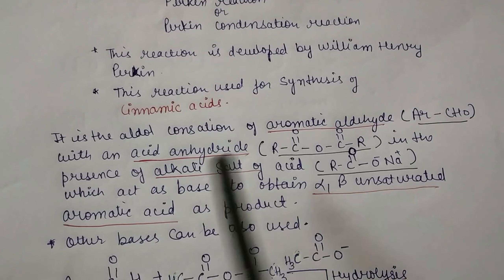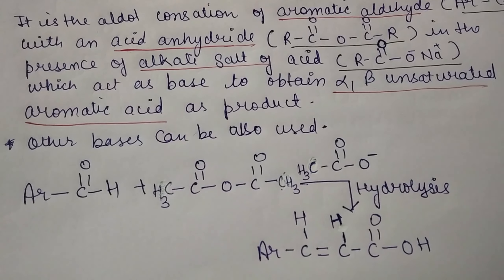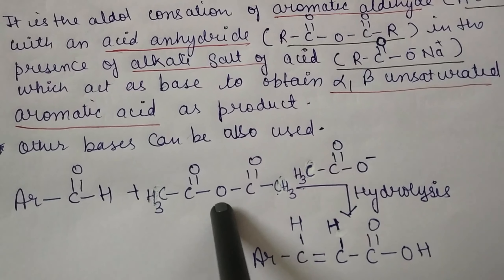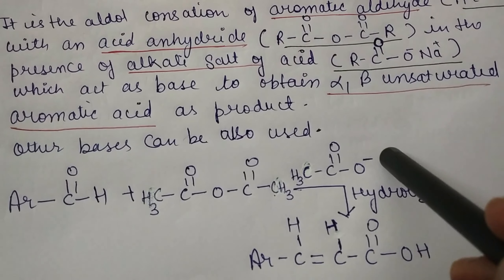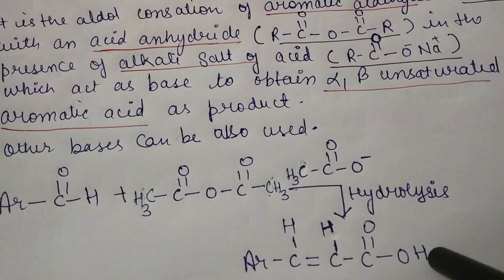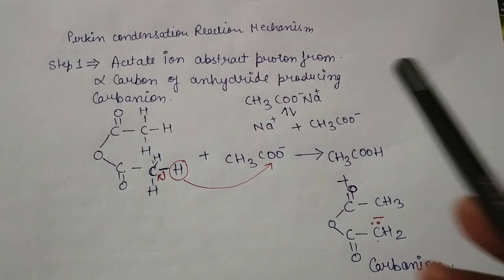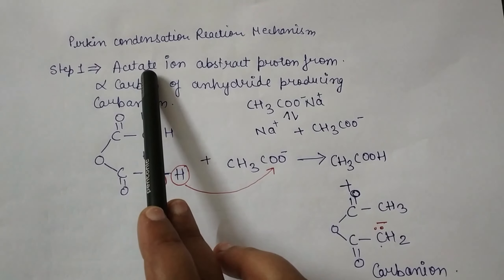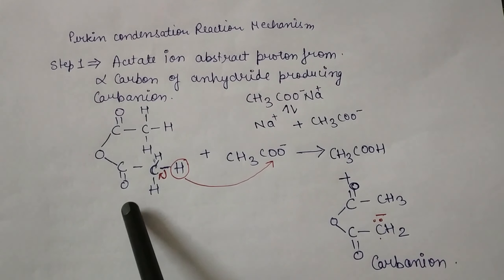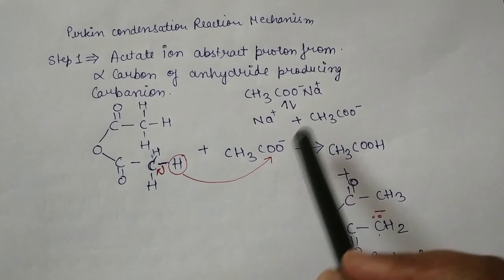Perkin reaction is also called Perkin condensation reaction. This reaction was developed by William Henry Perkin and is generally used for the synthesis of cinnamic acid. It is a type of aldol condensation in which an aromatic aldehyde reacts with acetic anhydride in the presence of an alkali salt of the acid, which acts as a base to obtain an alpha-beta unsaturated aromatic acid as a product. On hydrolysis, the alpha-beta unsaturated aromatic acid is obtained.